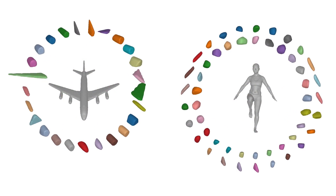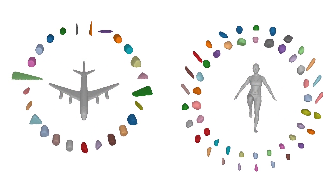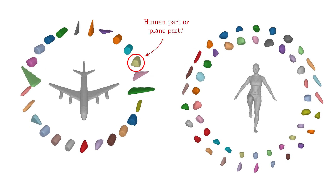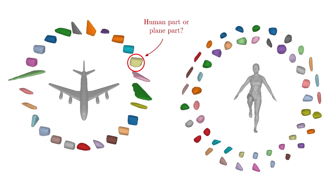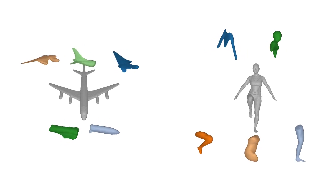For example, primitive-based reconstructions with 50 convexes result in accurate reconstructions. However, it is not possible to identify whether this part corresponds to the human part or a plane part. To address this, we introduce Neural Parts, a primitive representation that is not limited to a specific family of shapes, which results in geometrically more accurate and semantically more meaningful abstractions compared to simpler primitives.